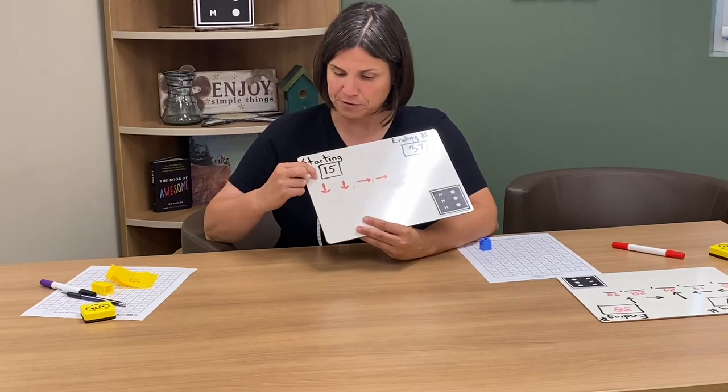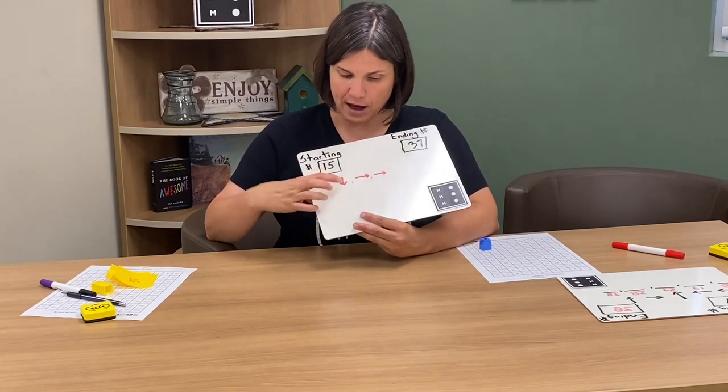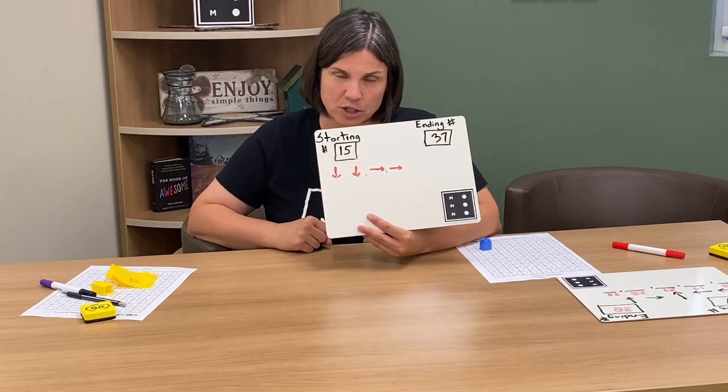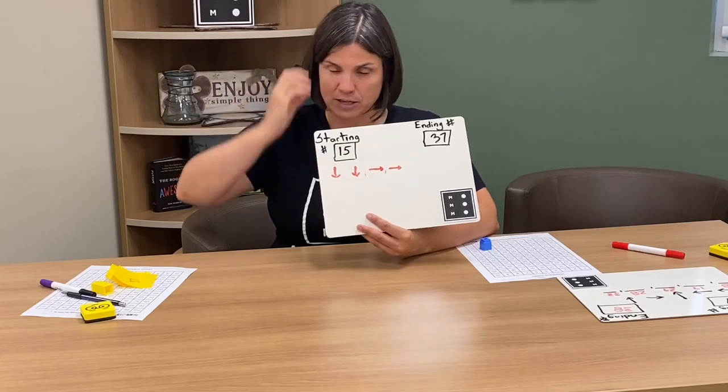So here if the starting number is 15 I could think 25, 35, 36, 37 and that would be the ultimate goal of what you want to get to with your students so that they just are so familiar with the hundreds chart and the patterns on it that they can do that mentally.